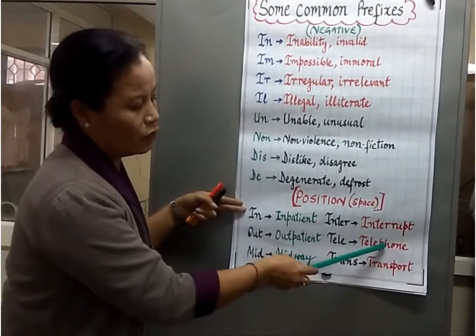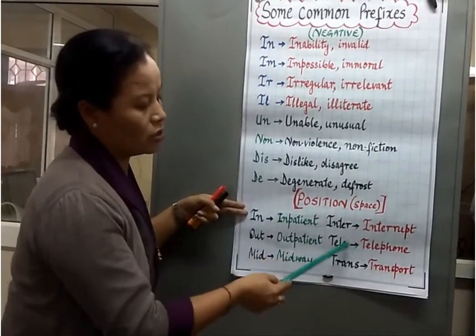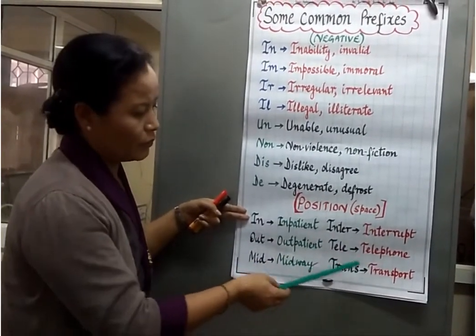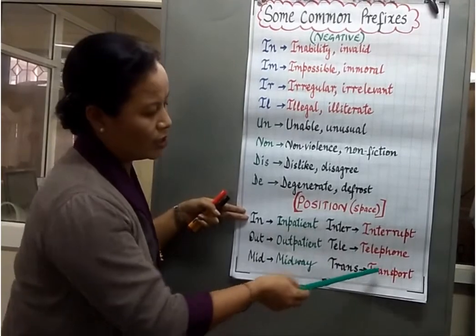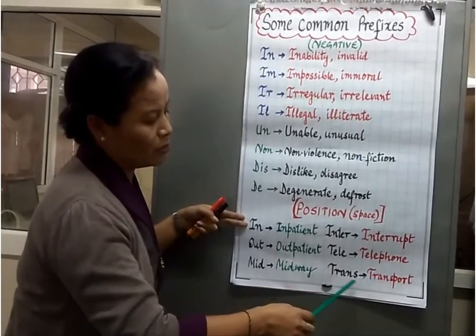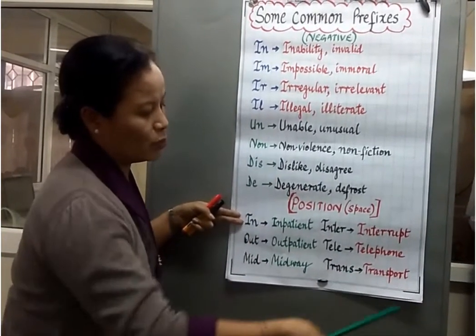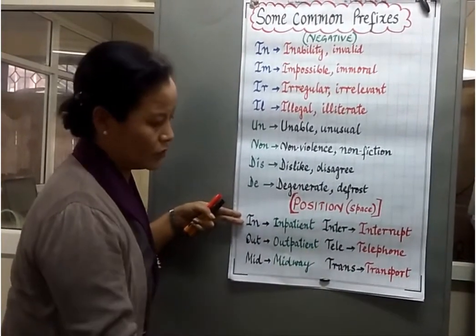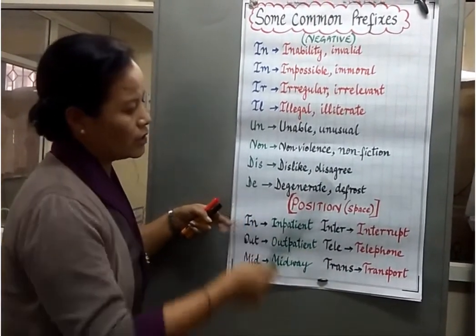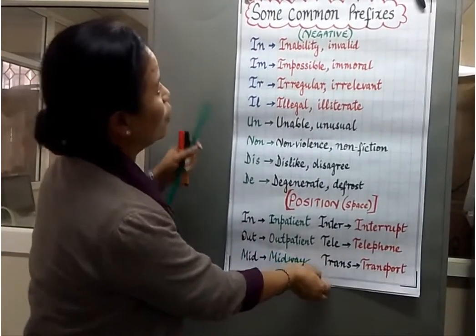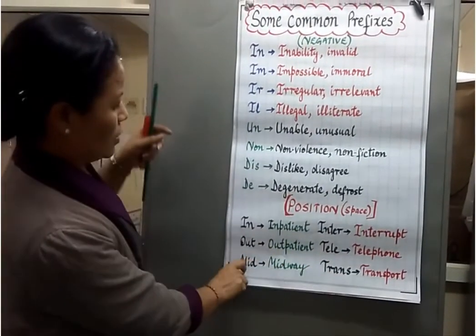And then 'tele': telephone, television — tele means distant. And then 'trans,' which means across: transport, transfer. So these are some of the common prefixes.